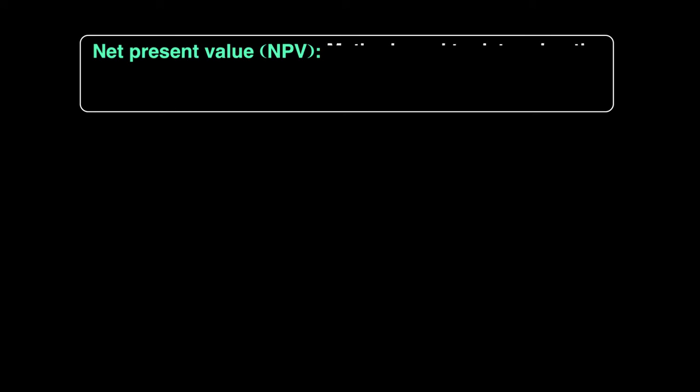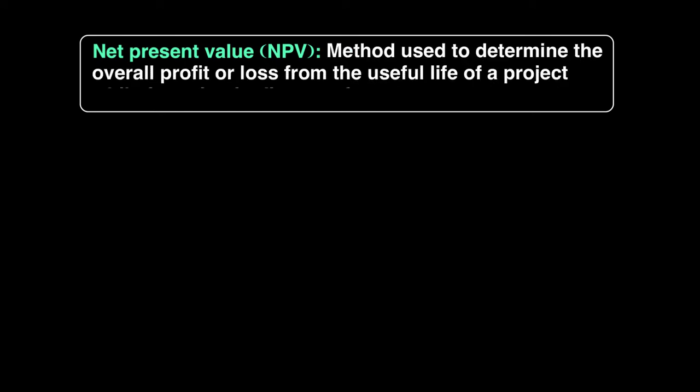So net present value is a method used to determine the overall profit or loss from the useful life of a project. So if it's for five years, you want to figure out what happens after five years while factoring in discount factors.